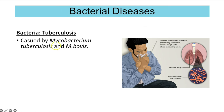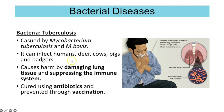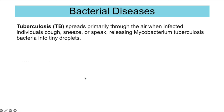Tuberculosis is caused by two different strains: Mycobacterium tuberculosis and Mycobacterium bovis. It can infect humans, deer, cows, pigs and badgers. The bacteria causes harm by damaging the lung tissue and suppressing the immune system. It can be cured using antibiotics because it's caused by bacteria, and it can be prevented with a vaccine, so you develop artificial immunity to it.